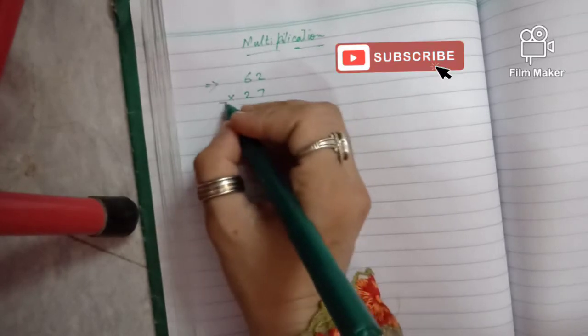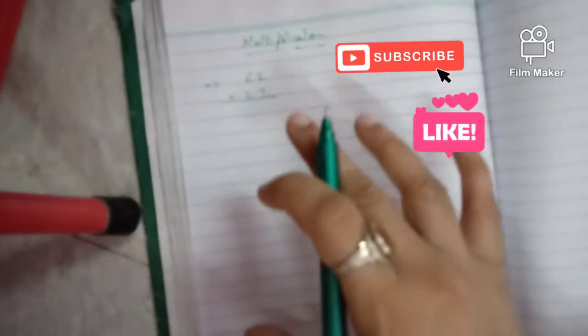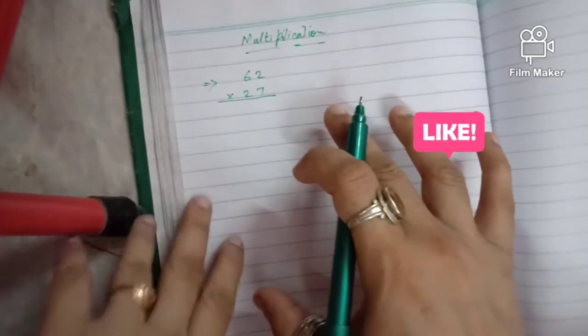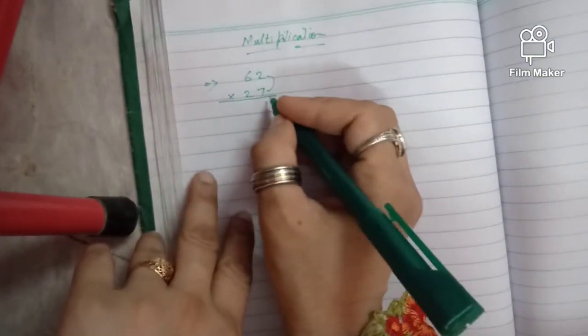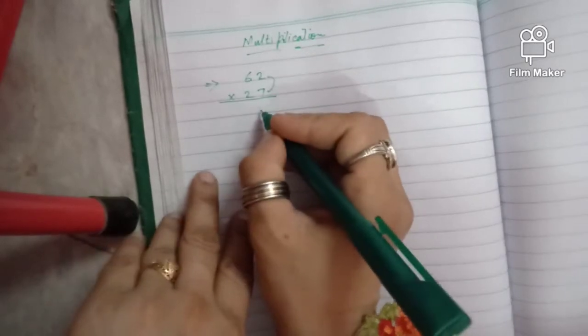Now we can solve this quickly. First, 7 multiply by 2 equals 14.